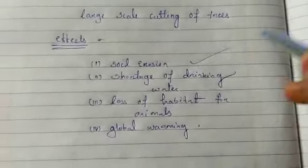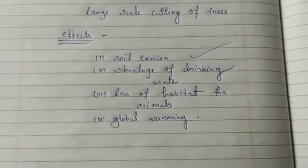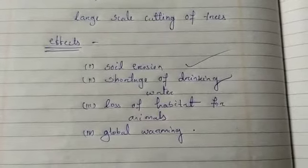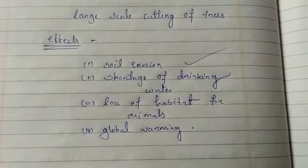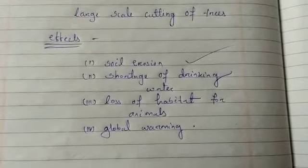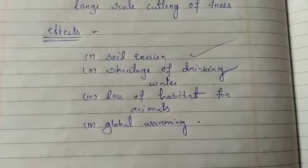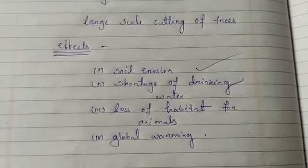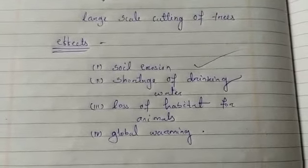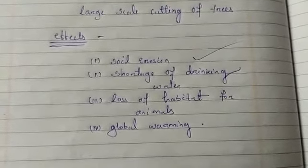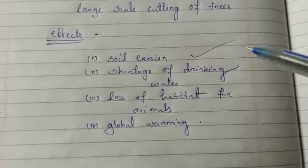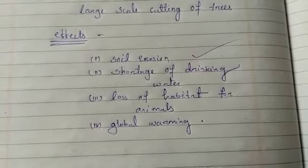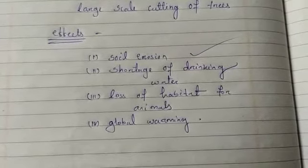First, soil erosion. Reduced forest cover leads to soil erosion and loss of soil fertility at many places. Due to cutting down of trees, the roots are not able to hold the soil. That is why soil erosion takes place and the fertility of the soil is also lost.